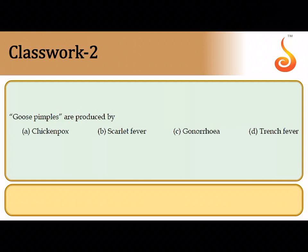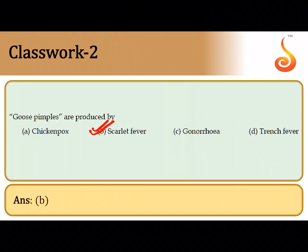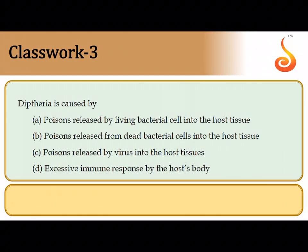The second question: goose pimples are produced by — goose pimples are papules which erupt on the skin and are red in color. This is seen in scarlet fever, which is caused by the same causative agent as streptococcal throat infection — Streptococcus pyogenes. So goose pimples are produced by scarlet fever, and option B is the correct answer.